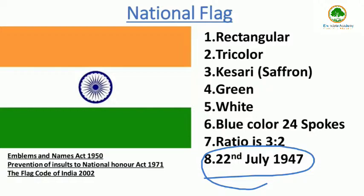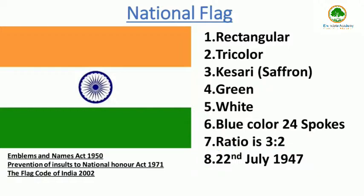By law, the flag is to be made of khadi, a special type of hand-spun cloth or silk, made popular by Mahatma Gandhi. The manufacturing process and specifications for the flag are laid out by the Bureau of Indian Standards. Usage of the flag is governed by the Flag Code of India and other laws relating to the national emblems.